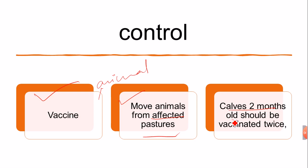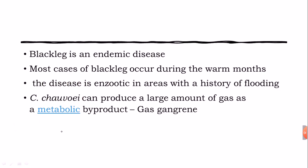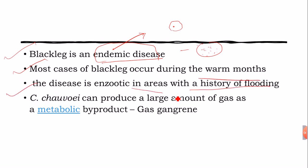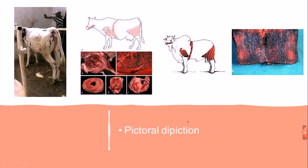Animals should be moved from affected pastures, and calves should also be vaccinated twice a year. Black Leg disease is an endemic disease — it inhabits a particular area where the whole population can be affected at the same time. If one animal is affected, many others could be as well due to the presence of spores. Most cases occur during warm months, and the disease is exotic in areas with a history of flooding. Clostridium chauvoei can produce a large amount of gas as a metabolic byproduct, known as gas gangrene.